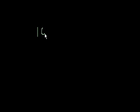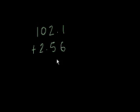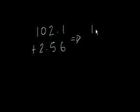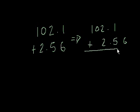Let's do one more problem: 102.1 plus 2.56. Think about magnitude — 102.1 plus 2.56 should be about 104 point something. First thing: line up the decimal points. 102.1 plus 2.56, decimal points aligned. Now we can add a trailing zero here and we're ready to add.